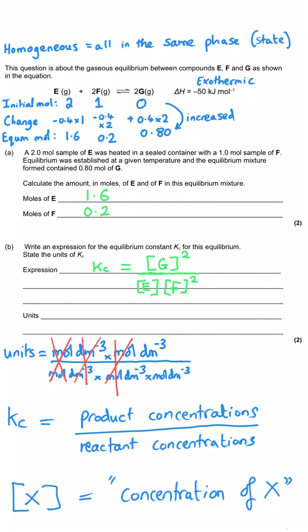dm minus 3 cancels out also twice, leaving one of them on the bottom. Then when we've got this term 1 over moles per decimetre cubed, we need to bring that moles per decimetre cubed up to the top, and moles to the 1, which is what it was on the bottom, when you bring it up to the top, becomes moles to the minus 1, and dm minus 3 on the bottom, when you bring it up to the top, becomes dm to the 3. And so the units are mole minus 1 dm to the 3.